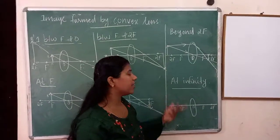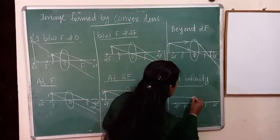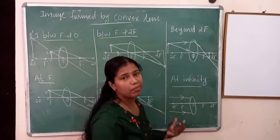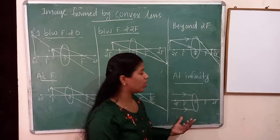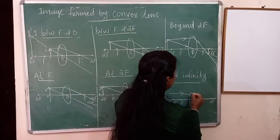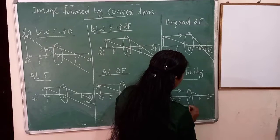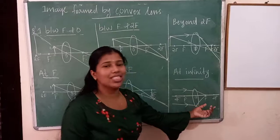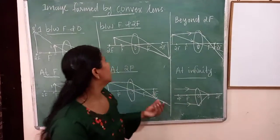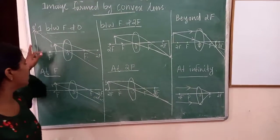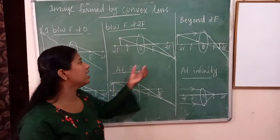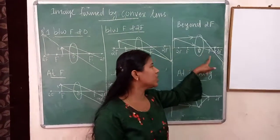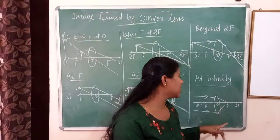Sixth case: object is at infinity. Many rays are coming from infinity — we use two of them. Applying the first rule, after refraction they all coincide at the focus. The image position is at F. To summarize: first case — virtual image same side; second case — at infinity; third case — beyond 2F; fourth case — at 2F; fifth case — between F and 2F; sixth case — at F.